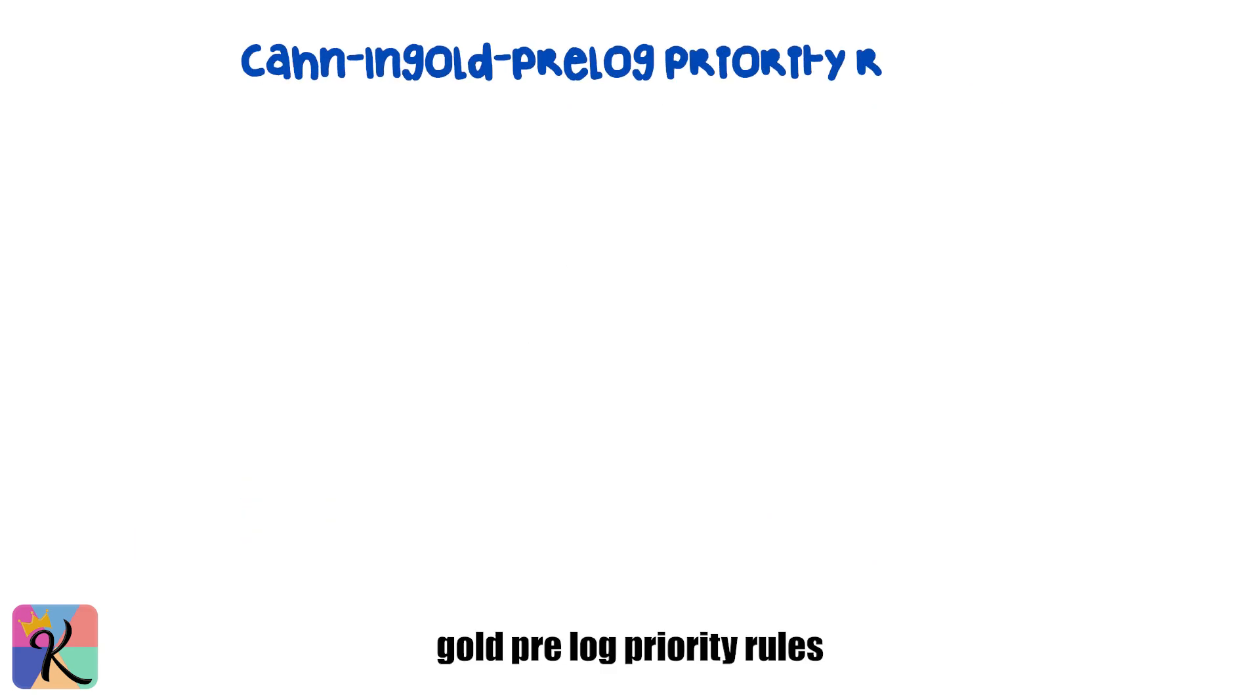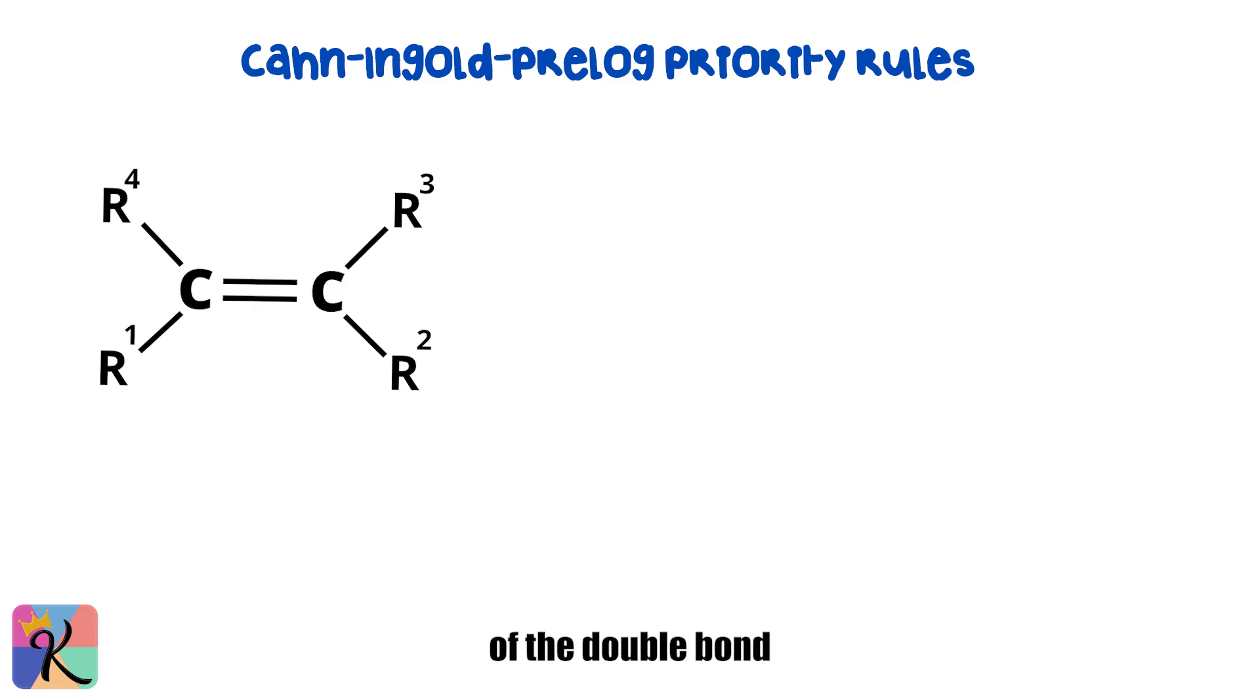To assign E or Z configurations, we use the Cahn-Ingold-Prelog priority rules. We look at the atoms directly attached to each carbon of the double bond. The atom with the higher atomic number gets the higher priority. If there's a tie, we move outward atom by atom until the tie is broken. If the two highest priority substituents are on the same side of the double bond, it's Z. If they're on opposite sides, it's E.